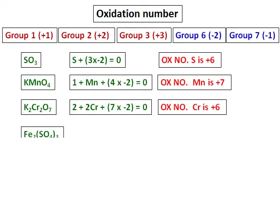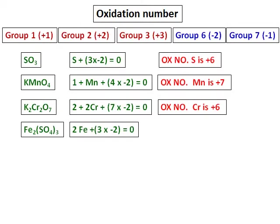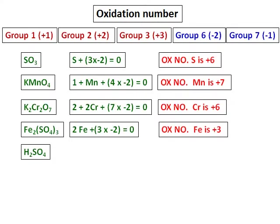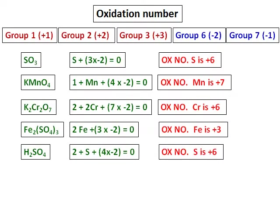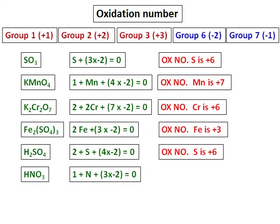For the next compound, Fe2(SO4)3 — iron(III) sulfate — you have been asked to calculate the oxidation number for iron, Fe. I can take sulfate as a whole: SO4 has a charge of negative 2, and hence each iron ion gets a charge of positive 3. Then for sulfuric acid, the oxidation number of sulfur is positive 6. For nitric acid, the oxidation number of nitrogen has been calculated and that comes as positive 5. And for ammonia, the oxidation number of nitrogen is negative 3.